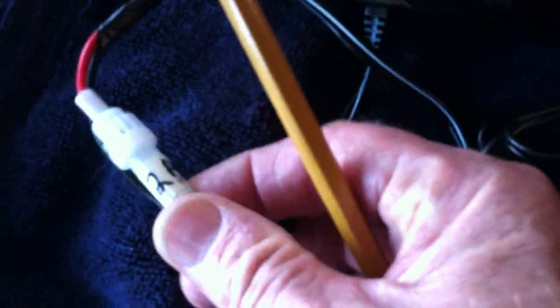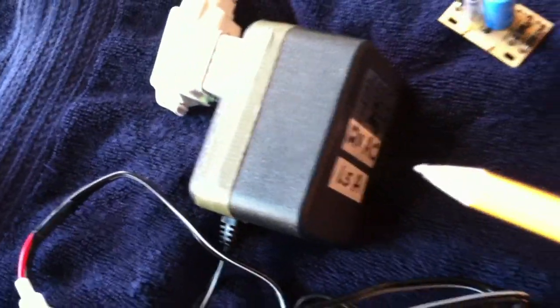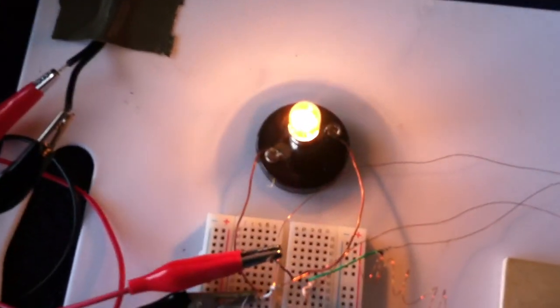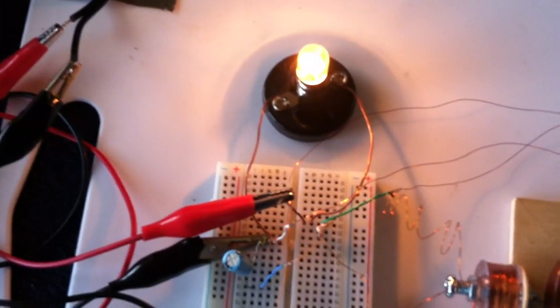I put a fuse in it right there. It's a 2 amp fuse. So I don't cause any problems. And then I put a switch on it so I can turn it on and off. And then I put an indicator light on it so I can see when it's on. And that just goes across the input.